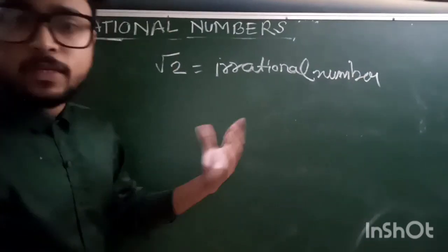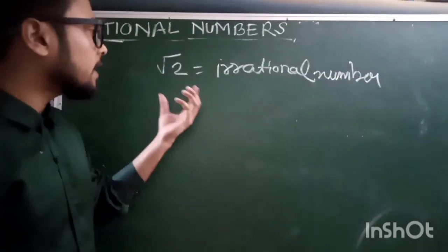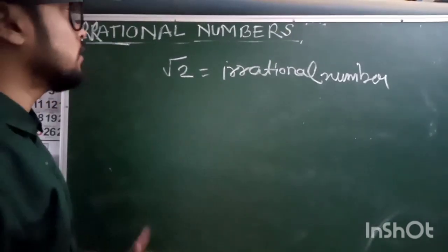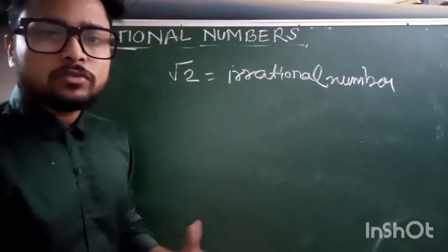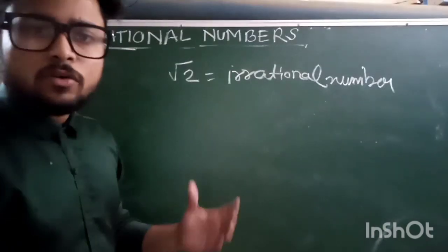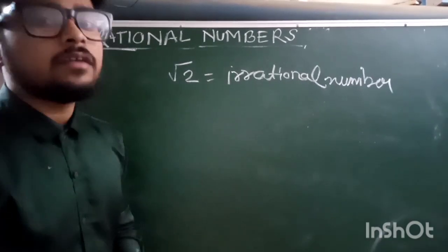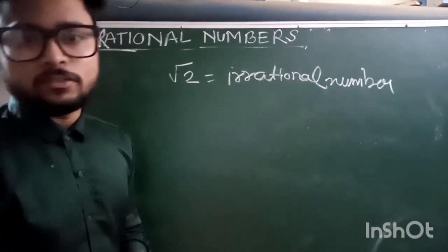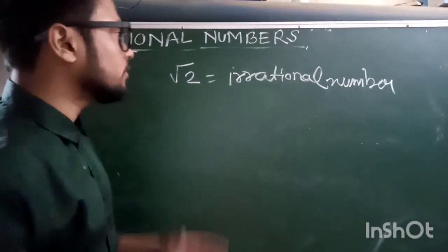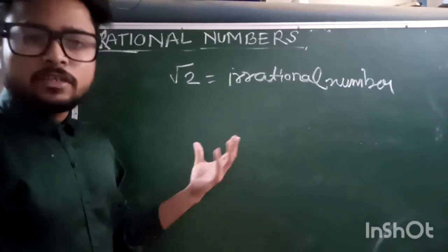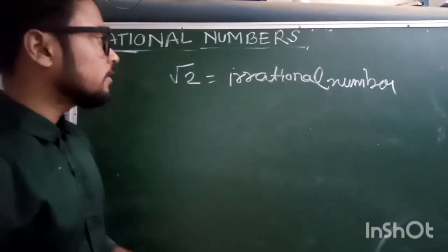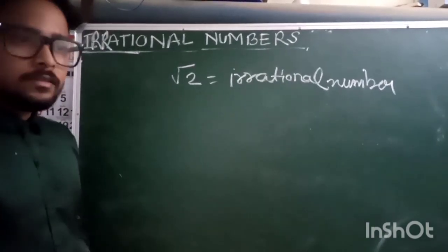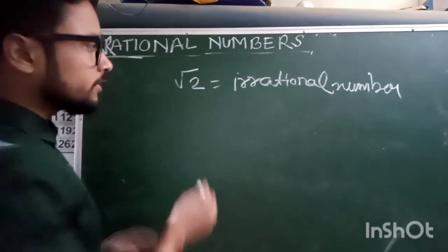Root 2 is irrational because we cannot write its value as p by q. In other words, the numerator and denominator of an irrational number cannot be found as integers — that is why it cannot be represented as a rational number.